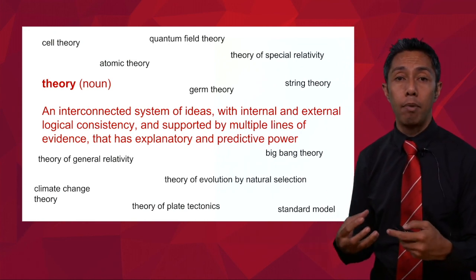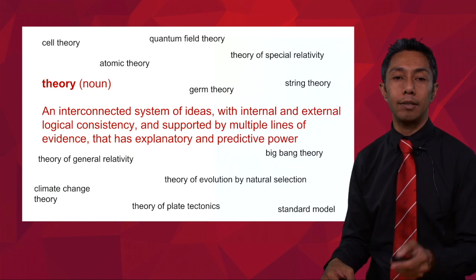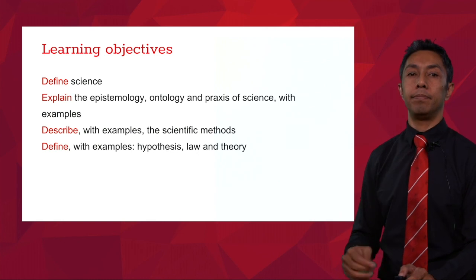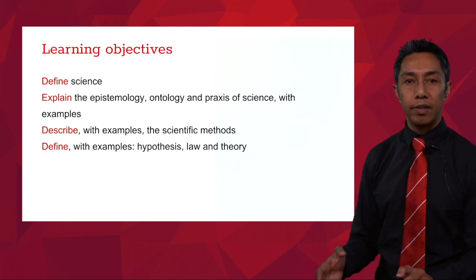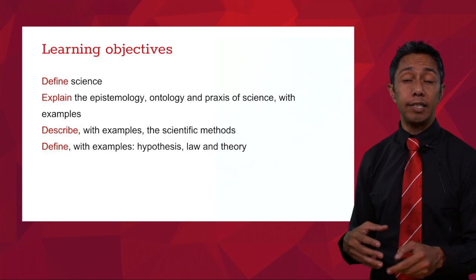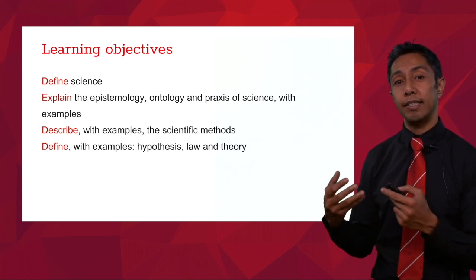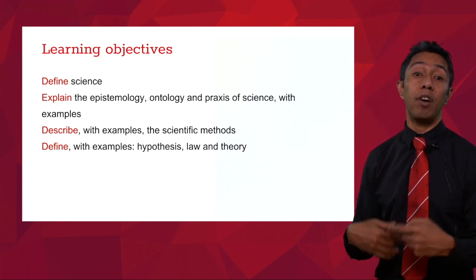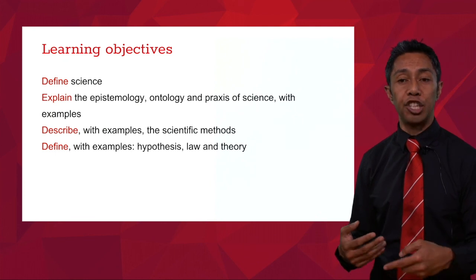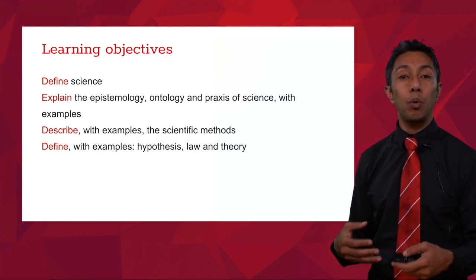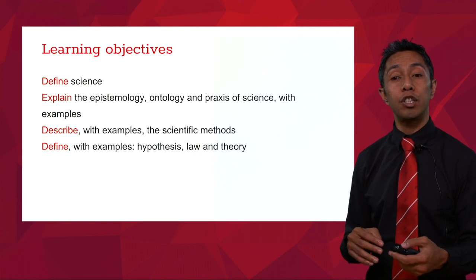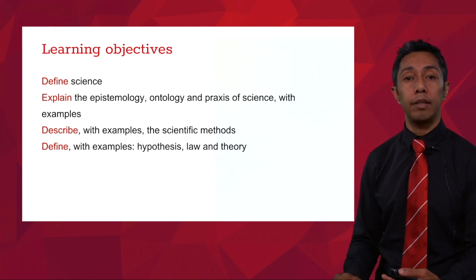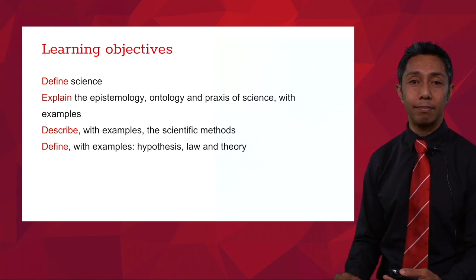Let's review what was covered in this lecture. We firstly defined science — what science is and what science is not — by describing and providing examples of epistemology, ontology and practices of science. We've also looked at the four types of scientific methods and gave examples of those. Then we defined laws, theories and hypotheses. Thank you.